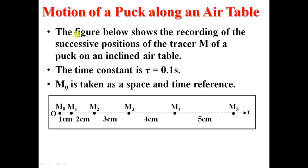Here is our main objective: Motion of a puck along an air table. The figure below shows the recording of the successive position of a tracer M of a puck on an inclined air table. The time constant tau is 0.1 second. M0 is taken as space and time reference. Tau equals 0.1. As we said before, tau is the time separating two consecutive dots. The puck leaves a dot M0. After 0.1 second, it will leave another dot M1. The time separating M0 and M1 is 0.1 second. The time separating M1 and M2 also 0.1 second. The time separating M4 and M5 is 0.1 second. We notice that this puck travels a greater distance during the same time.